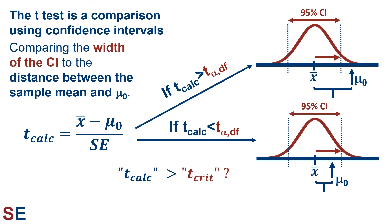Diagramming it out, the t-test is an indirect comparison of the confidence interval to the distance between the sample mean and mu naught. We get our t-calculated value from the sample mean minus mu naught divided by the standard error, then compare it to a critical t-value corresponding to the alpha value and degrees of freedom. If the t-calculated value is larger in magnitude than the t-critical value, then mu naught is not within the confidence interval. If it is smaller in magnitude, then mu naught is within the confidence interval.